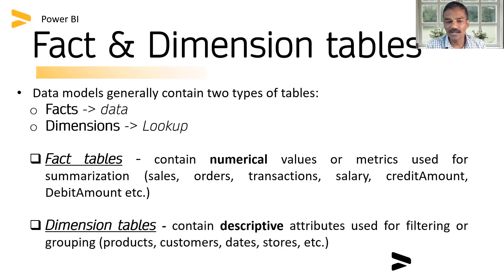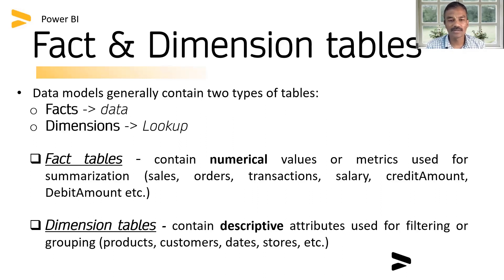In the dimension table, there are descriptive attributes stored. For filtering and grouping, there are dimension tables. For example, there are products. What is the product? What is the brand? What is the name? What is the size? What is the attribute-related information?